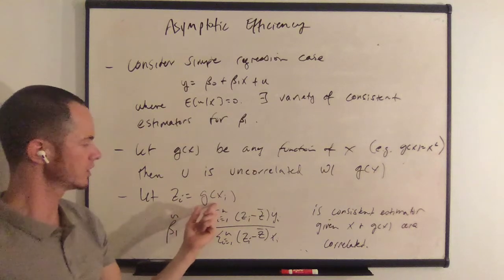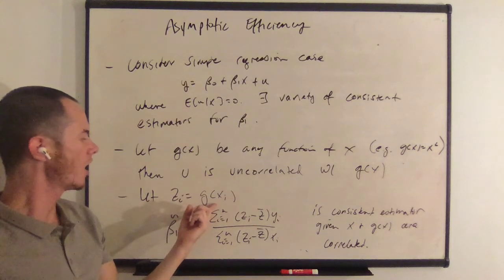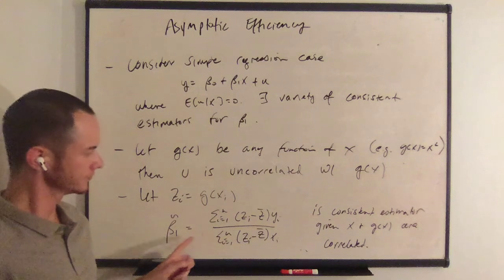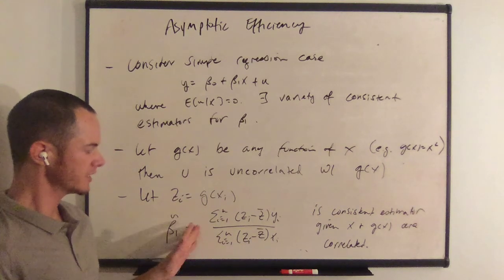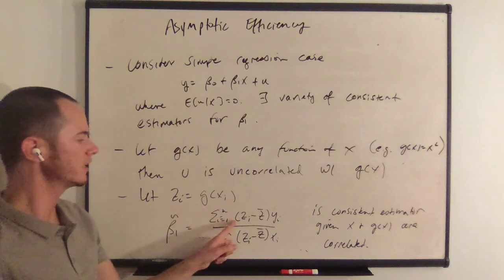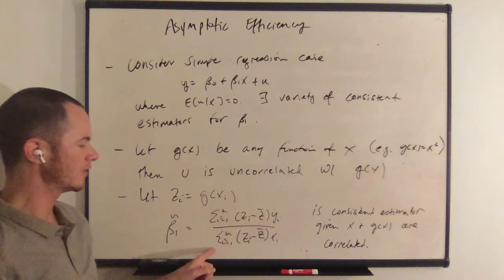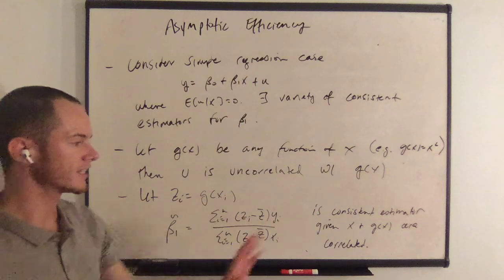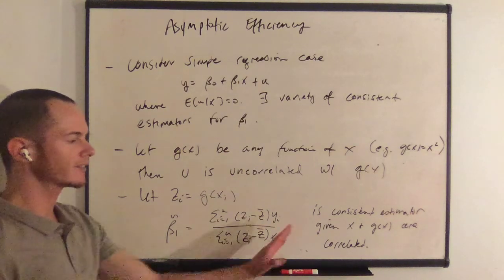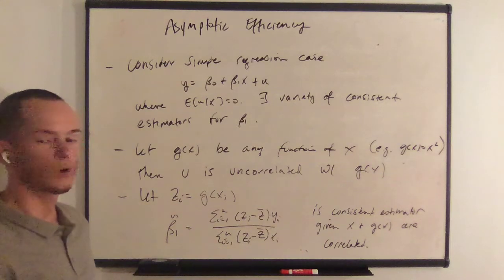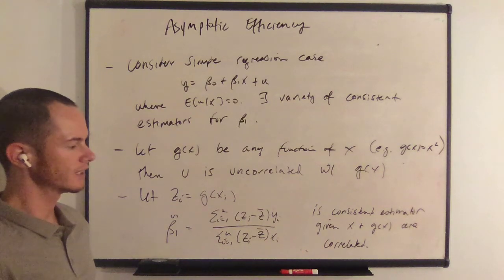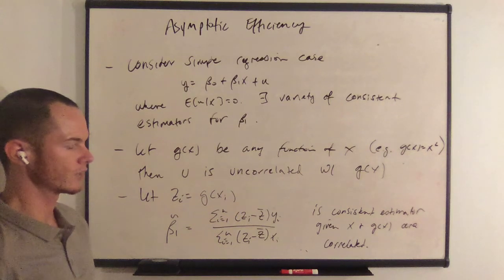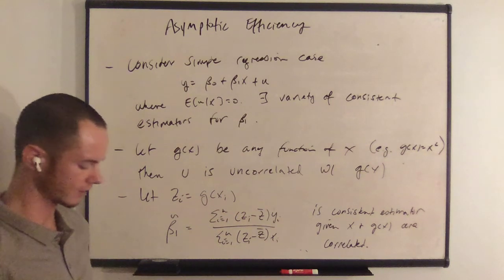Let g of i equals g of x of i. Then beta 1 tilde, this expression for beta 1 tilde, which is the sum from i=1 to n of zi minus z bar times yi all over the sum from i=1 to n of zi minus z bar times xi, is a consistent estimator given x and g of x are correlated. Recall that correlation is a linear characteristic and so there could be some sort of nonlinear relationship there that correlation does not pick up. So we are assuming that these things are correlated.